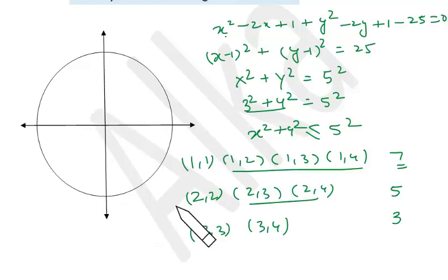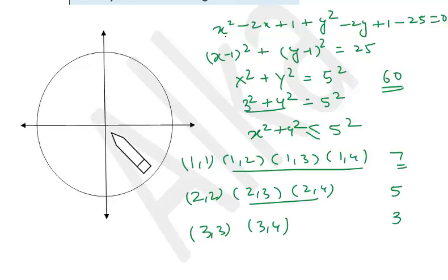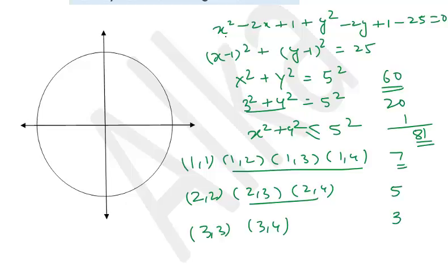Since we skipped zeros, we now add axis points: (0,1), (0,2), (0,3), (0,4), (0,5) — that's 5 points per axis, and with 4 axes that's 20 more points. Then we still have the origin (0,0), giving one more point. In total there are 81 points on or inside the circle with integral coordinates. Once you're clear on the concept, the problem takes less than a minute to solve.